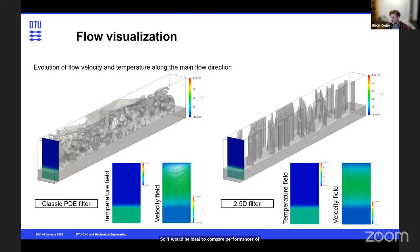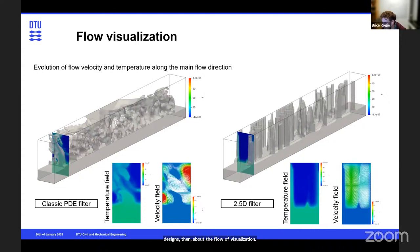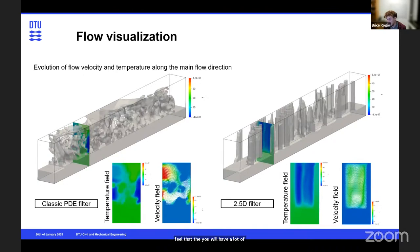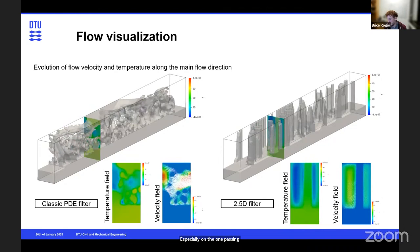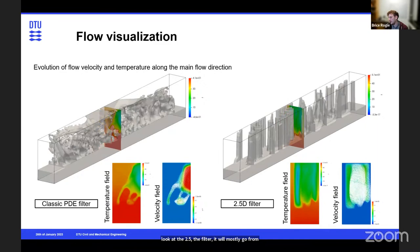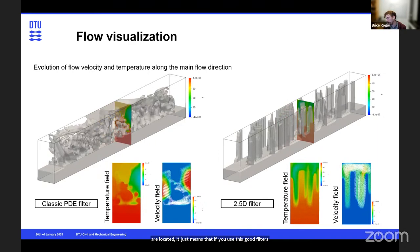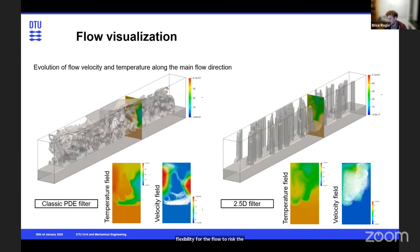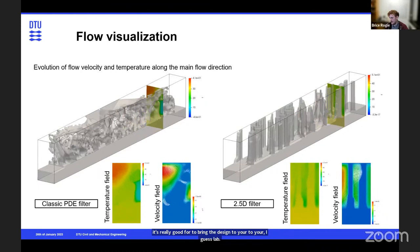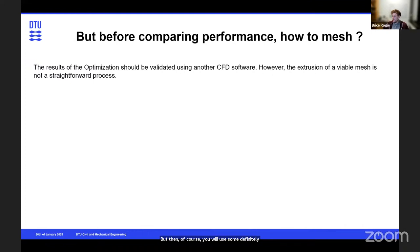For flow visualization: the 3D design shows flow accelerating in all directions, whereas for the 2.5D filter design the flow mostly goes left to right depending on where the fins are located. This means that using manufacturing-friendly filters limits flow flexibility to reach places where the heat flux is highest. You gain manufacturability but lose some performance.